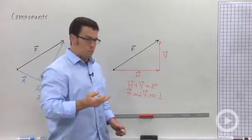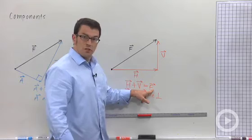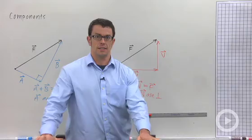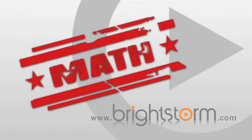So, again, the two requirements for components are that the vectors add up to your original vector F and that they're perpendicular to each other. We'll be finding components in this lesson.